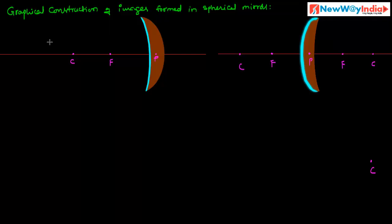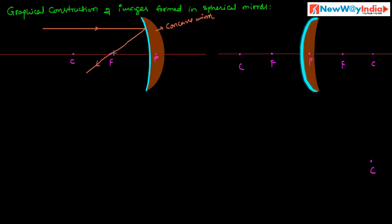Let us discuss the graphical construction of images formed in spherical mirrors. What are the rules for constructing ray diagrams using spherical mirrors? First, consider a ray of light traveling parallel to the principal axis. After reflection from a concave mirror, the reflected ray passes through the principal focus. This is the first condition for a concave mirror.